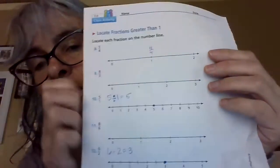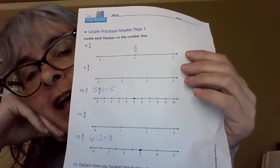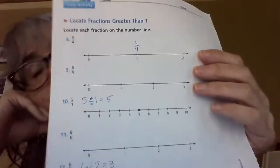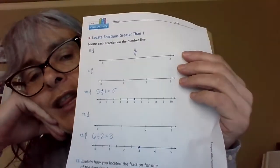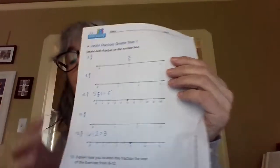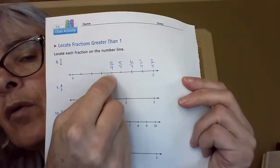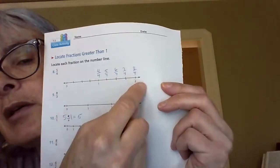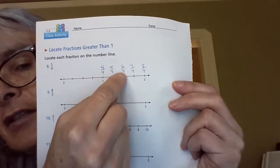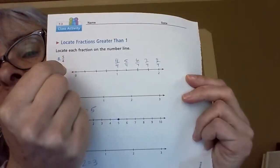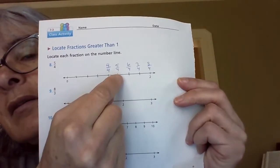I don't have to divide the number line between zero and one — I just divide that second section between one and two into four equal pieces. Cut it in half, then cut my halves in half. From one whole, which is four fourths, I label the four parts: four fourths, five fourths, six fourths, seven fourths, eight fourths. They're asking me to find five fourths — right there, easy peasy lemon squeezy!